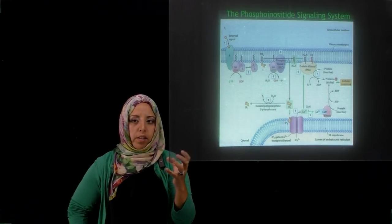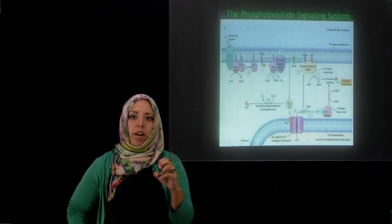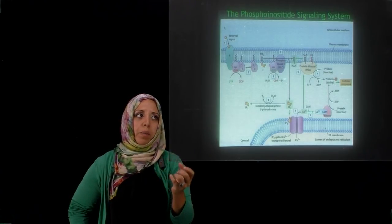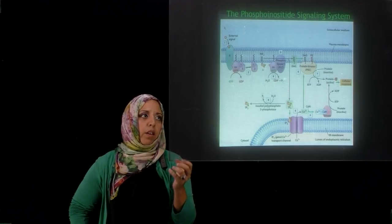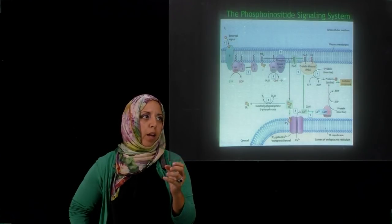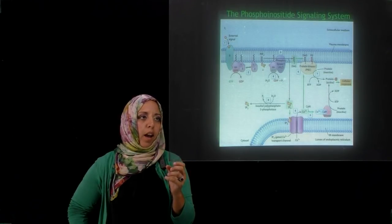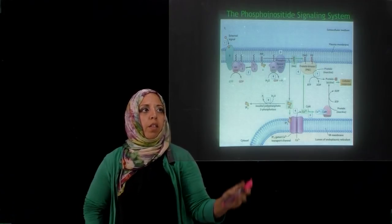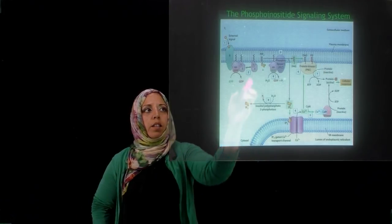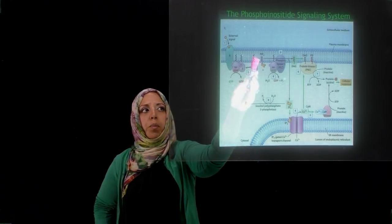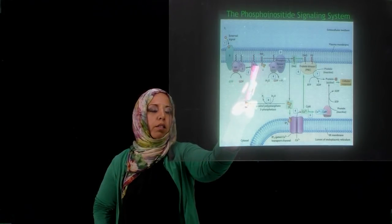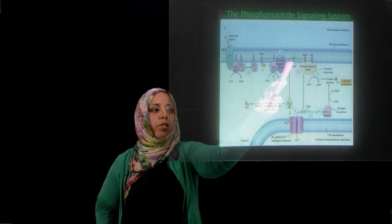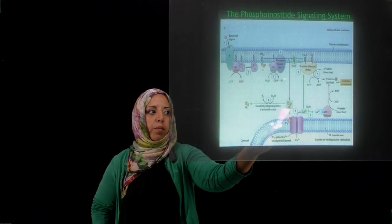Once the alpha subunit of the hetero-trimeric G protein is bound to phospholipase C, it activates it, which triggers the hydrolysis of PIP2, producing DAG and IP3.